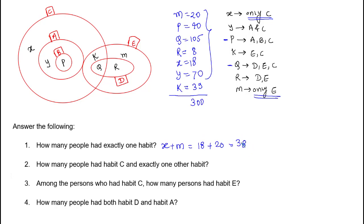Question 2: how many people had habit C and exactly one other habit? The answer is y + k. The value of y is 70 and k is 39, so the answer is 109.